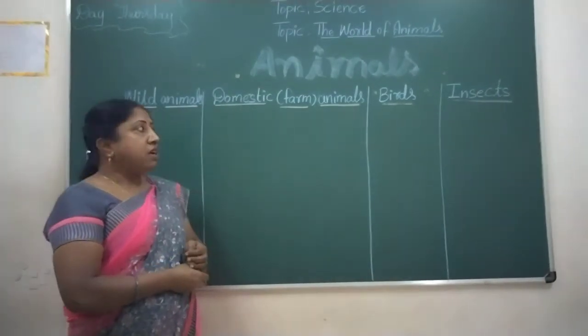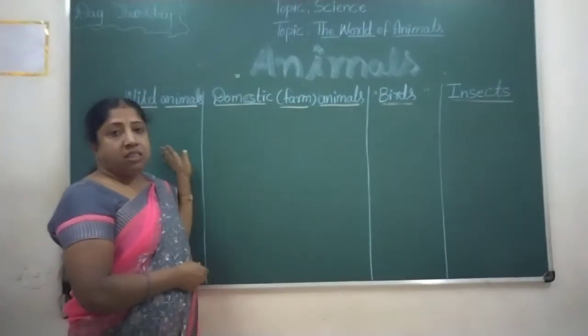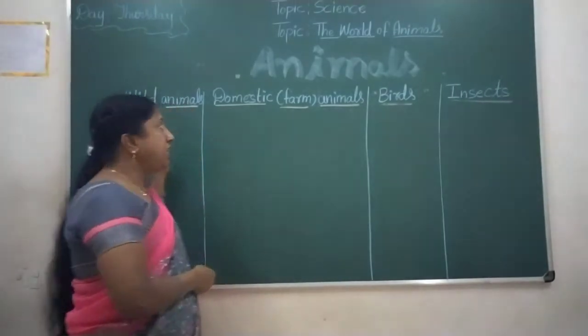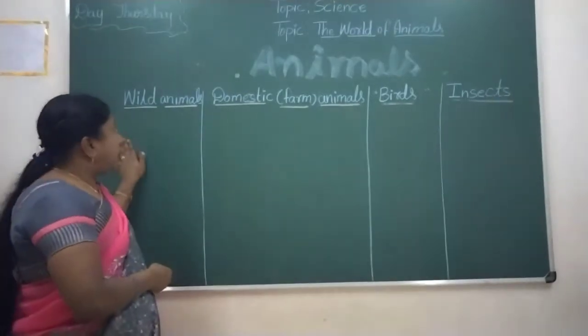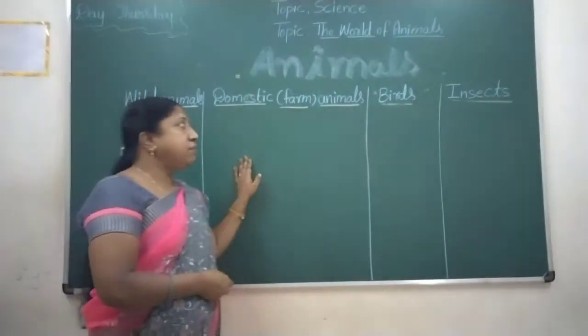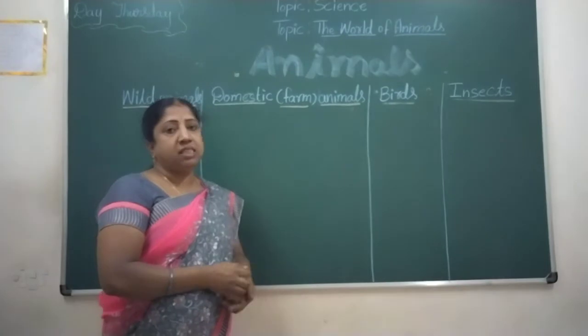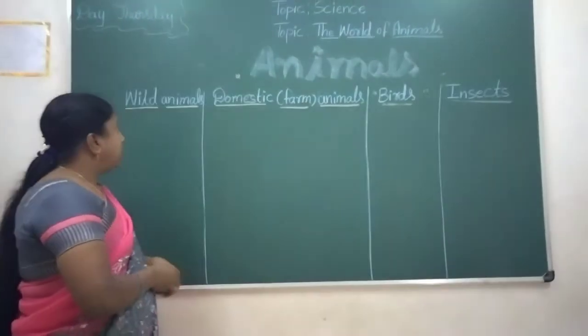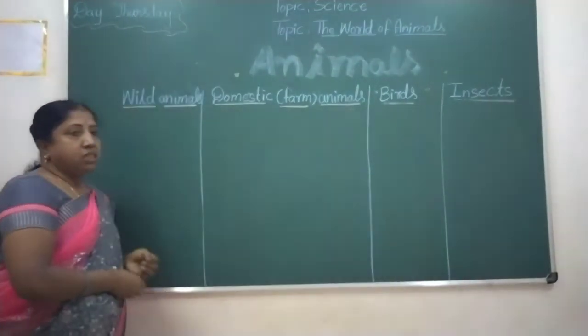See, the kinds of animals: wild animals, domestic animals, birds, insects. Now let's see wild animals.